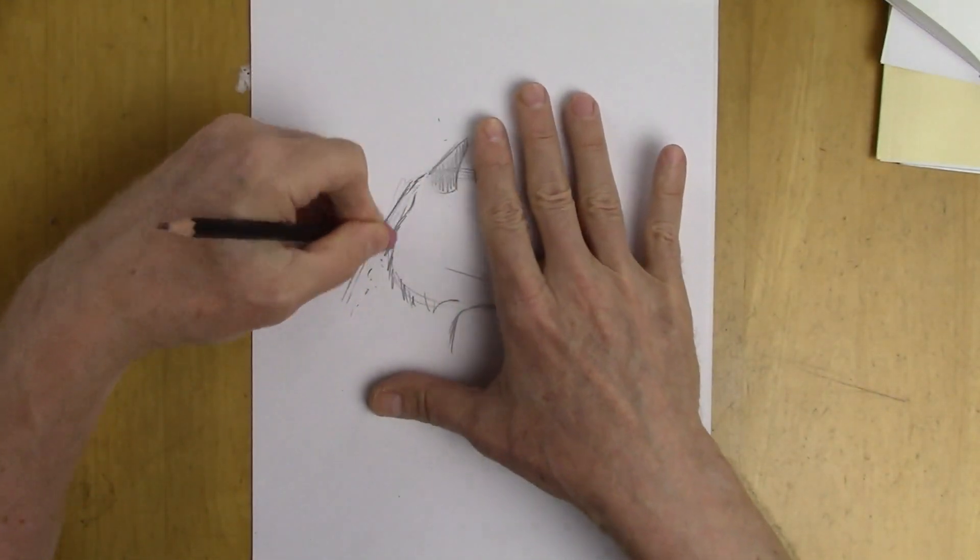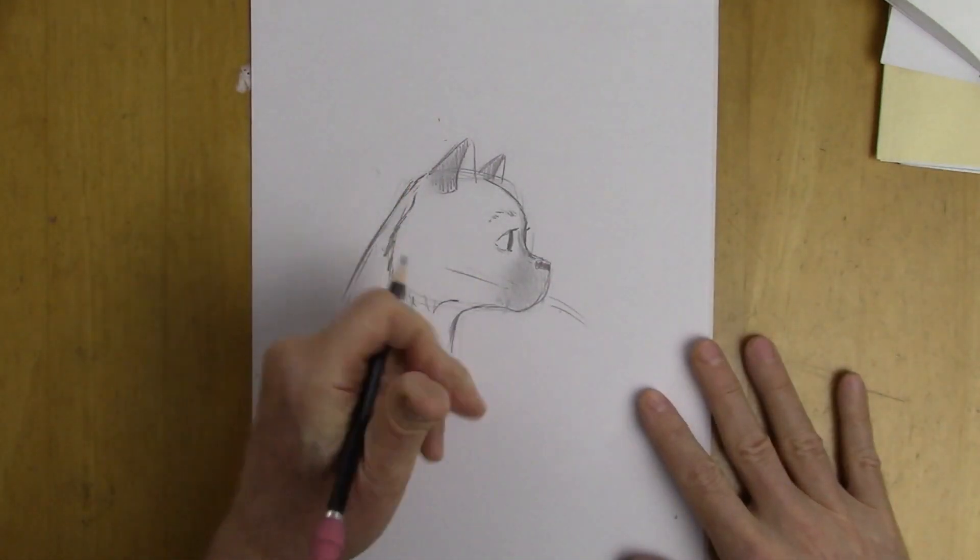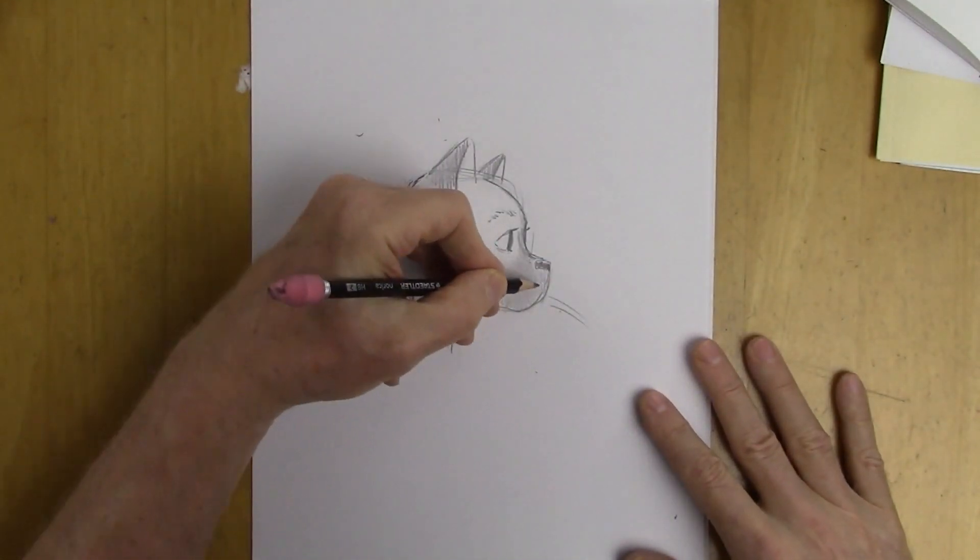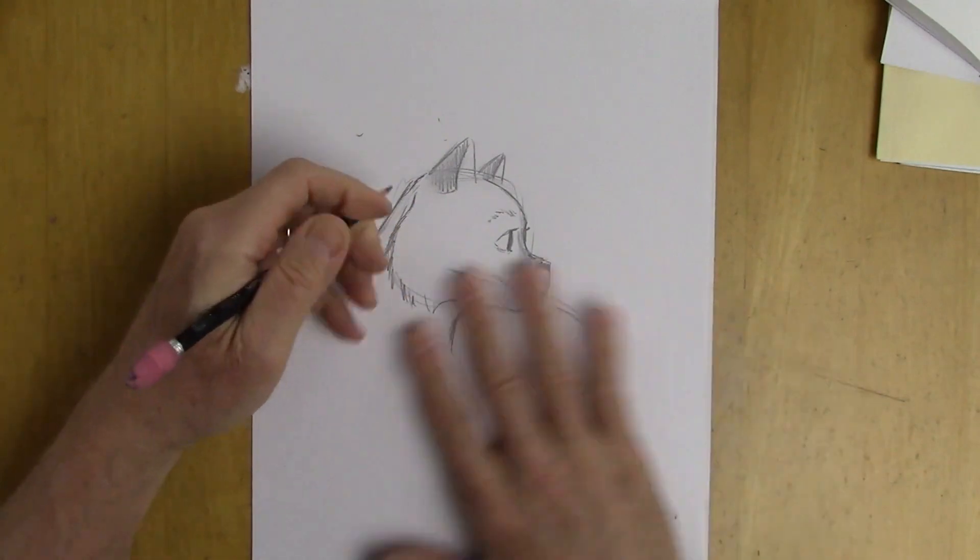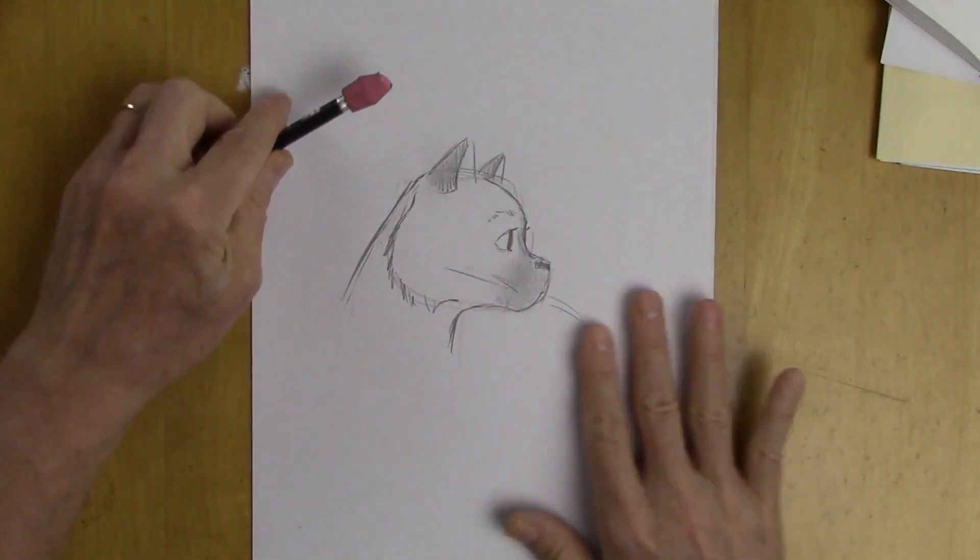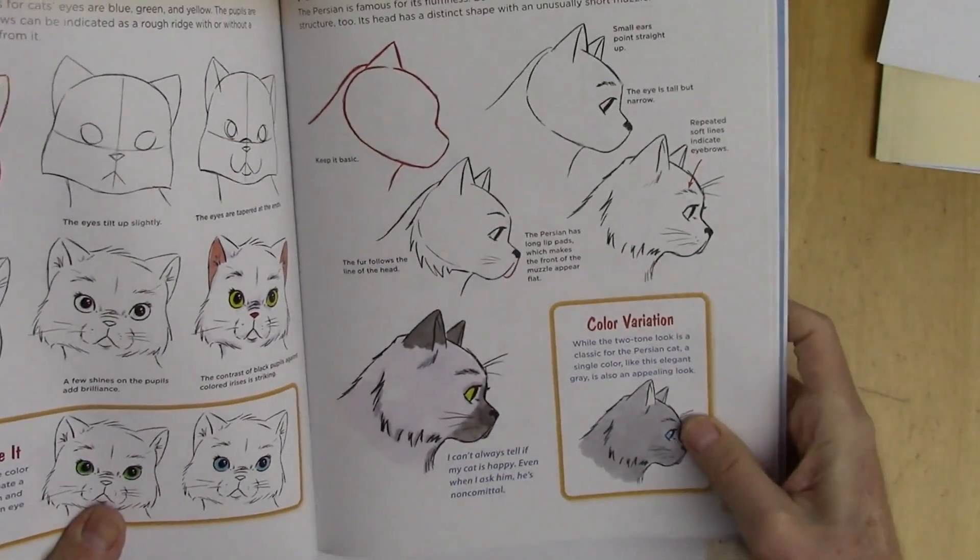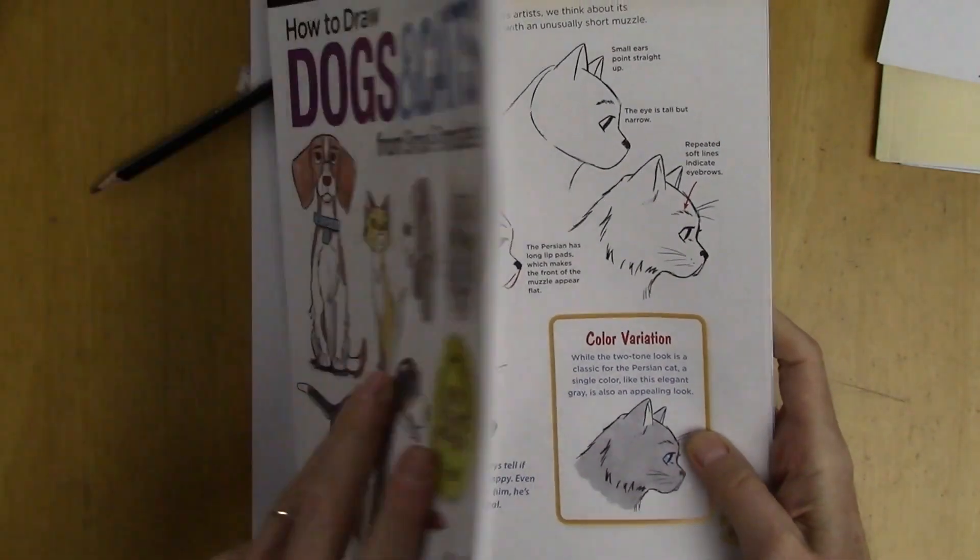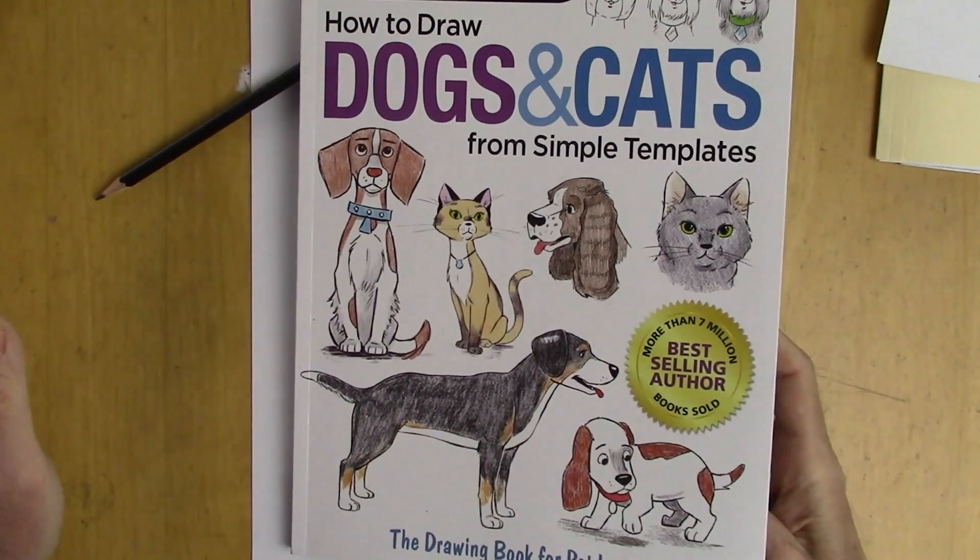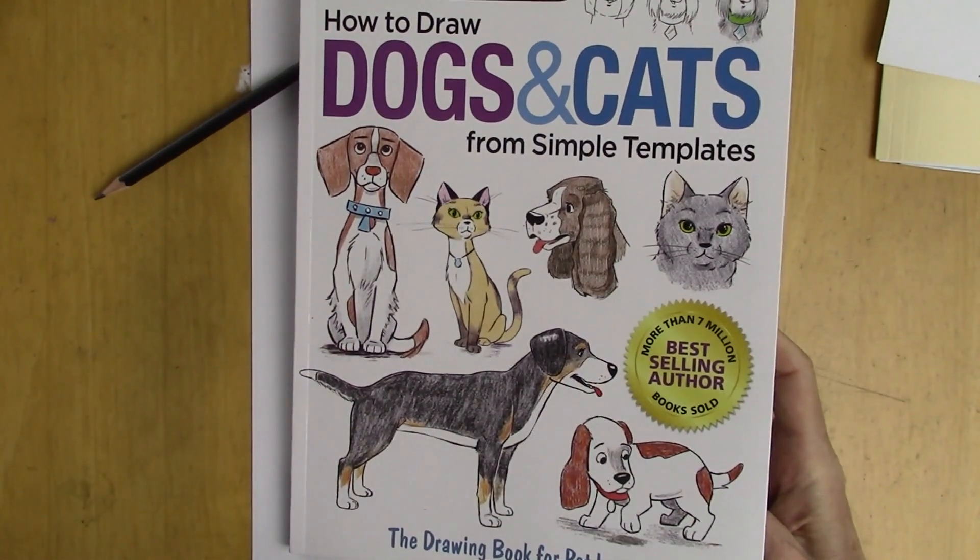I'll try to get rid of some of the scratchings here. There is a sketch of a Persian cat. And you can get that and a lot else in my new book, How to Draw Dogs and Cats from Simple Templates. It's everywhere. And I hope you'll check it out. Thanks for watching. Bye-bye.